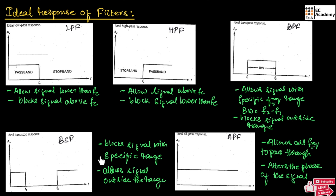These responses are used for theoretical analysis only. Practical implementation will be very different, where the transition from passband to stopband will not be this sharp — it will take time to move from passband to stopband. Practically, instead of a sharp transition, we will have a slope to represent the transition between passband and stopband. But understanding this ideal response will help in designing and analyzing the performance of actual filters.